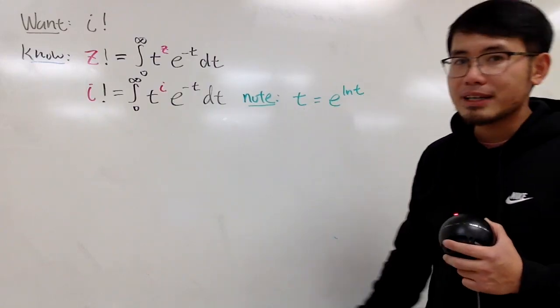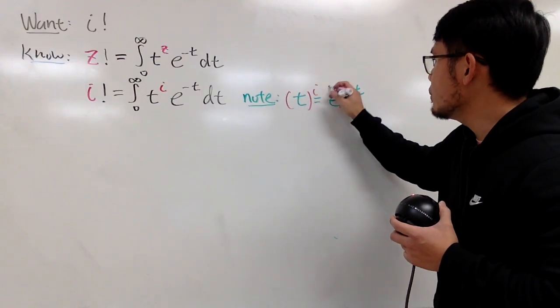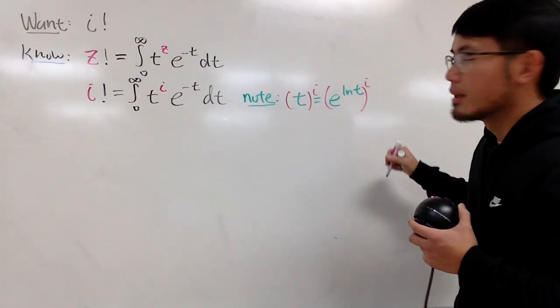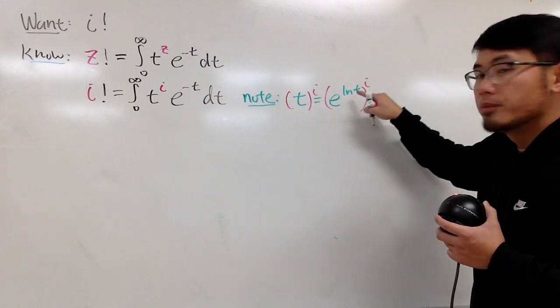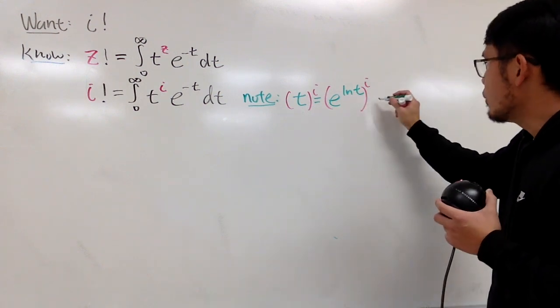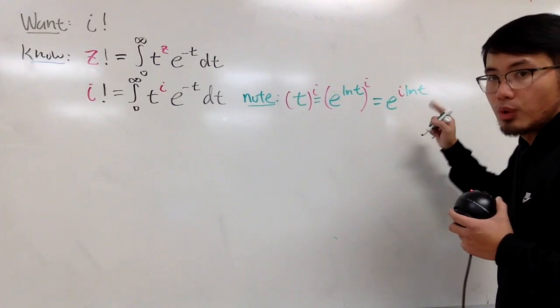And then, I still need to have the i's power. So, let's take both sides to the i's power here. And as you can see right here, e to the ln t to the i's power, we can just multiply the powers. So, we get e to the i times ln t right here.